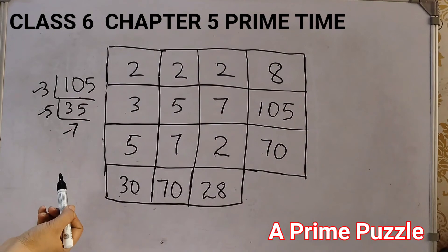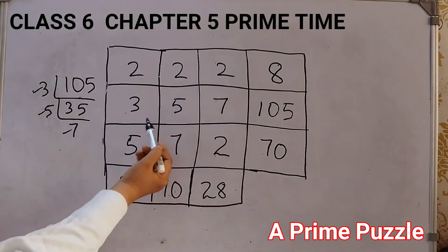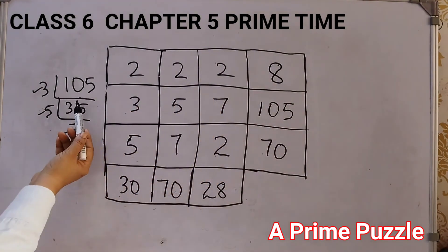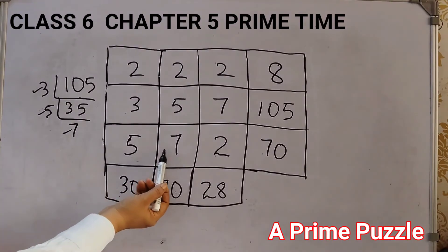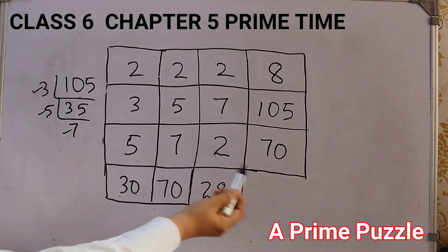Now let's check all the rows and columns. This we have already seen. This one also we have seen 105. Now this one, 5 into 7, 5 7's are 35, 35 into 2, 70. So this is correct.